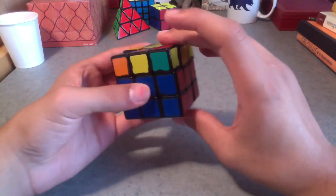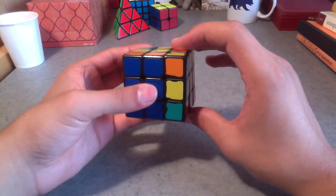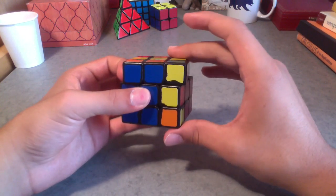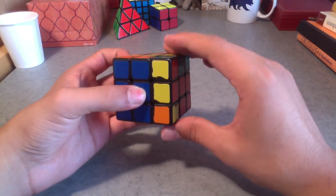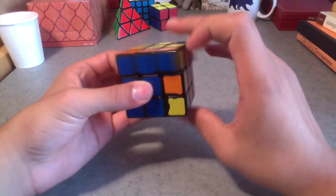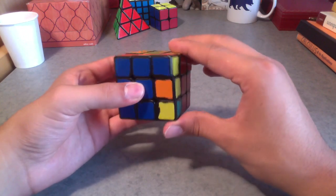But if you notice, when you're doing the algorithm, after you do, before you do that last move, you're going to have to undo it anyway. So to do the second R U R' U' sequence.